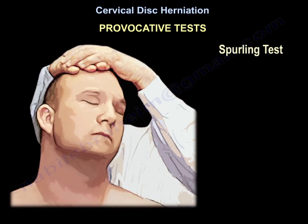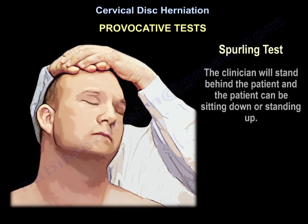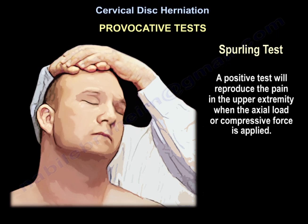The Spurling test is performed to assess cervical nerve root pain and impingement. The clinician stands behind the patient, who can be sitting or standing. The examiner performs extension, lateral flexion, and some rotation of the neck toward the affected side, then applies a downward compressive force to the top of the patient's head — axial loading — which reproduces symptoms by narrowing the neuroforamen. A positive test will reproduce pain in the upper extremity when the compressive force is applied.